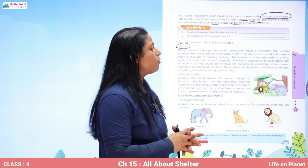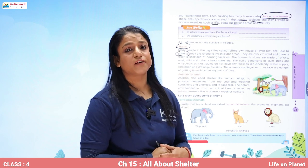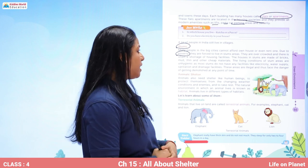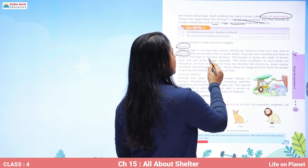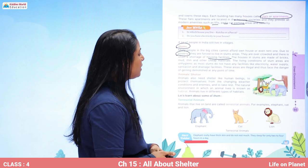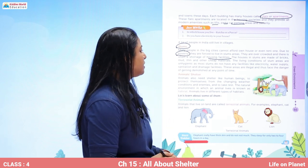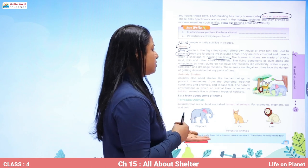Many people in big cities cannot afford to own or even rent a house in urban areas. When people cannot afford a good house, they live in slum areas. Due to poverty, they are forced to live there. Slums are overcrowded and there is often a shortage of housing facilities. The houses in slums are made of bricks, mud, tin, and other cheap materials, so they are not very durable and the walls are not very thick. The living conditions are unhygienic, as most slums do not have electricity, water supply, sanitation, or drainage facilities.